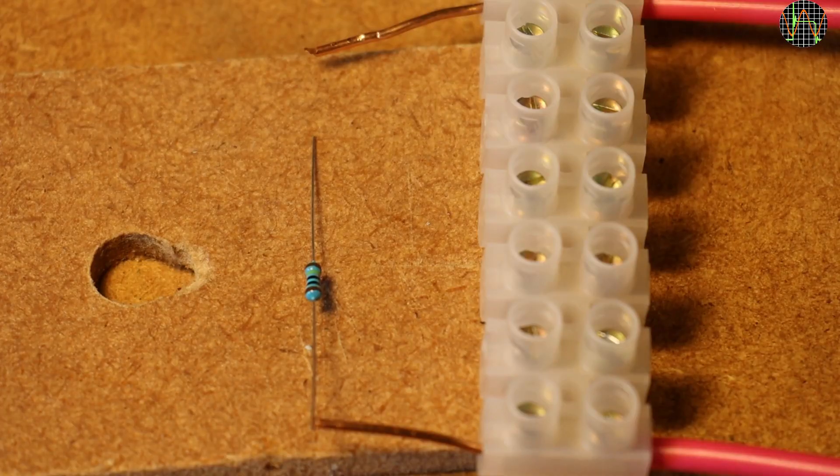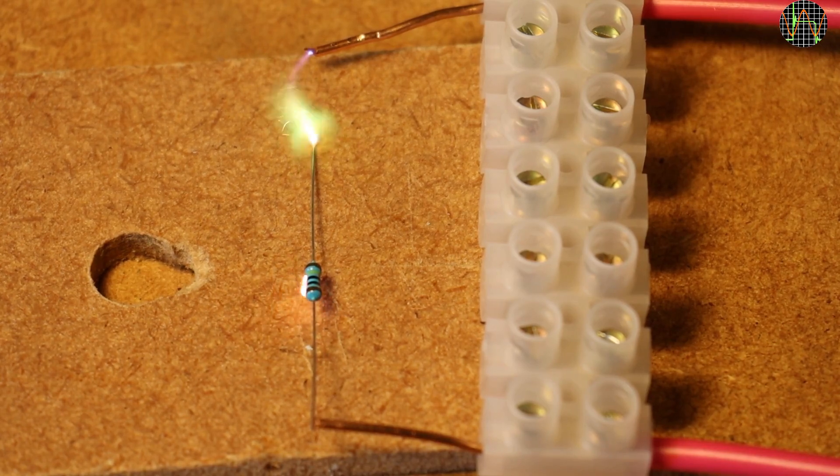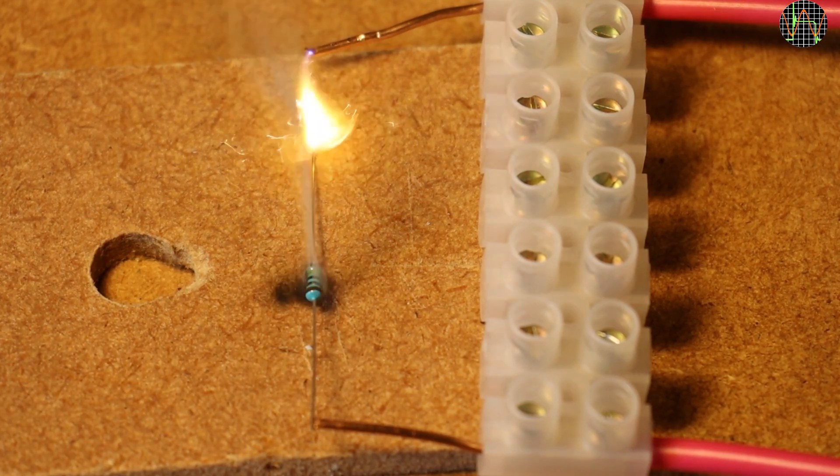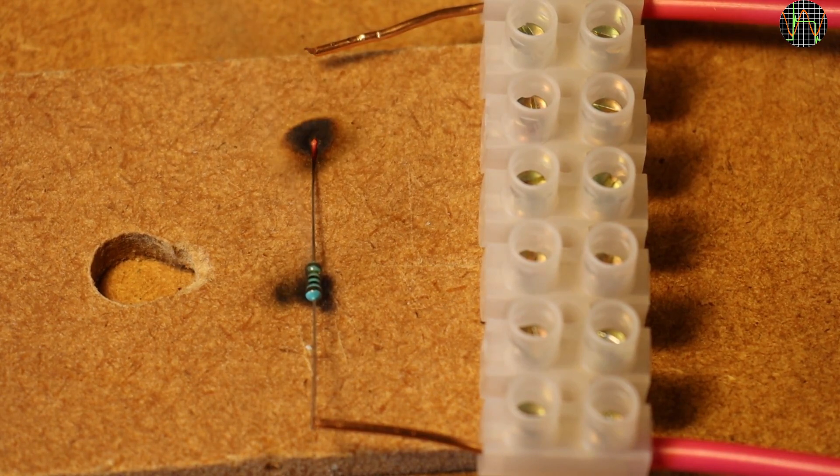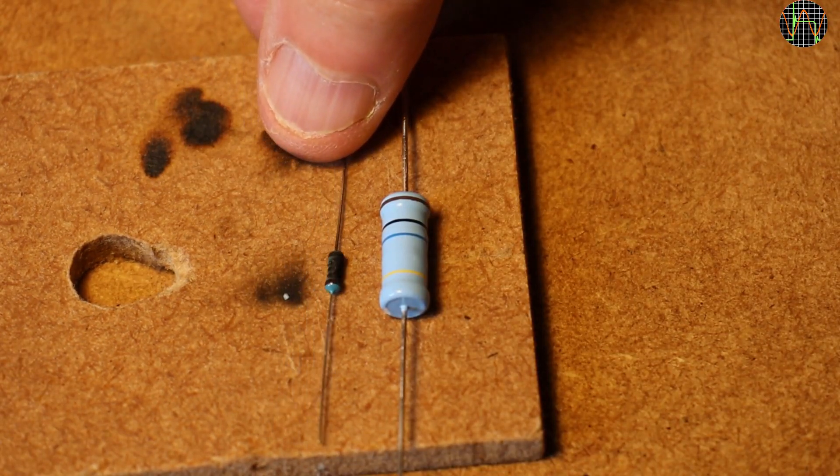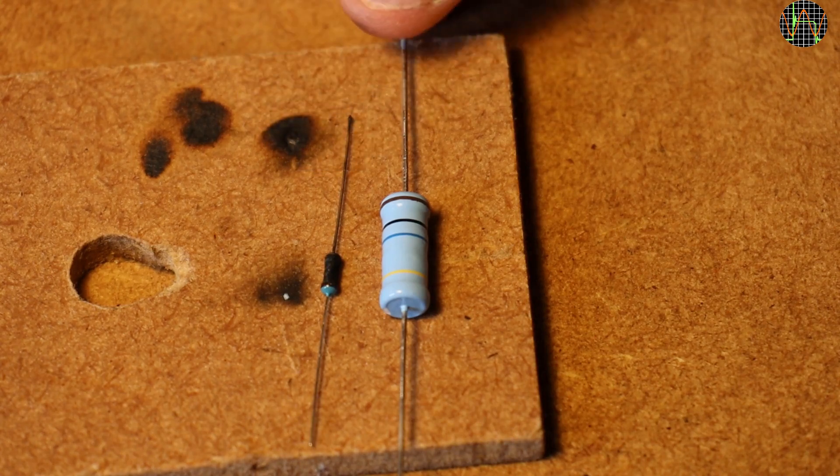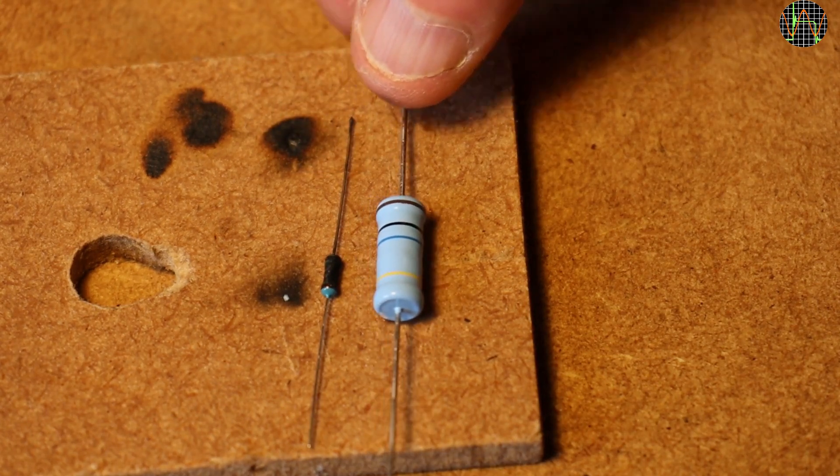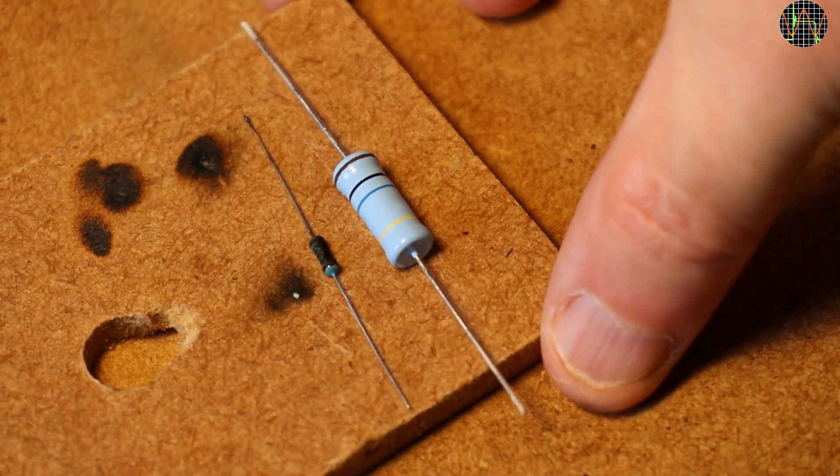By way of example, here is what happens if you run 7kV through a normal size MΩ resistor rated for 200V. You don't want this to happen inside your probe, so getting properly rated components from reputable sources is essential for your safety.